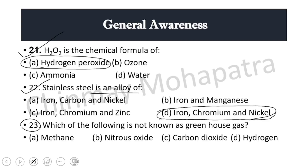Question 23: Which of the following is NOT known as a greenhouse gas? Options include carbon dioxide, nitrous oxide, and methane. The right answer is hydrogen — hydrogen is not a greenhouse gas.